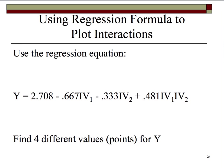Here's the regression equation from that SPSS output: Y equals 2.708 minus 0.667 times IV1 minus 0.333 times IV2 plus 0.481 times the cross-product IV1*IV2. We'll need to find four different values for Y — high on one and low on the other, low on one and high on the other, high on both, low on both.